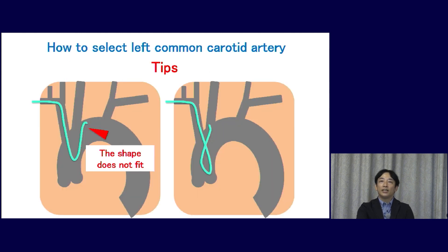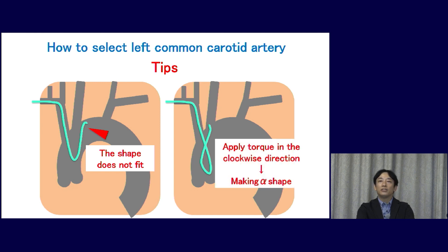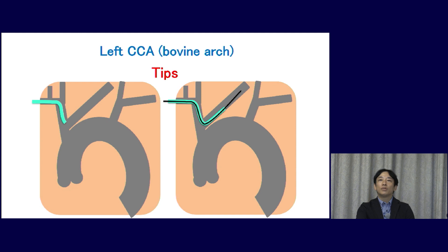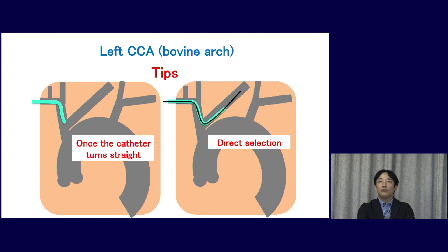Next is how to select the left common carotid artery. The Simon's shape sometimes does not fit to select it; in such a case, apply torque in the clockwise direction and select the left CCA by making the Simon's into an alpha shape. In the case of a bovine arch, where the left CCA originates from the brachiocephalic artery, we can select the CCA directly once the catheter turns to a straight shape.